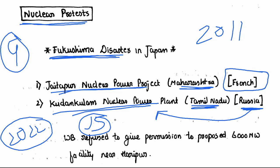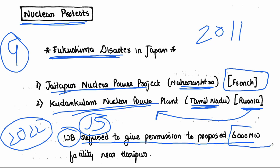Globally, more plants have been closed than started recently. In India, West Bengal refused to give permission for a proposed 6000 megawatt project at Haripur.